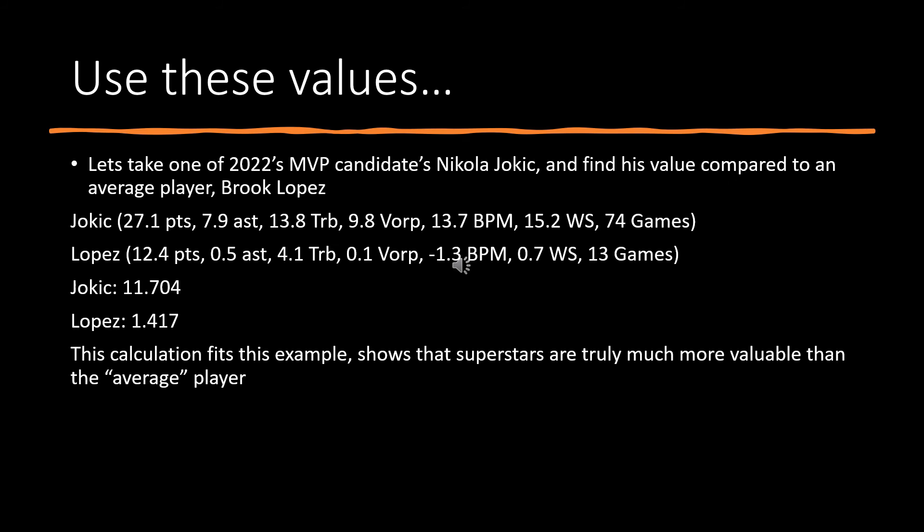Using these feature importance values, I'm going to take one of this year's MVP candidates, Nikola Jokic, and find his value compared to an average player from the season, Brook Lopez. Jokic averaged many points, assists, and rebounds, and had very high advanced metrics, while Lopez had fairly moderate to below-average ratings. Jokic has 10 points higher than Lopez in the value rating. This shows that superstars are truly much more valuable than the average player — not just a little bit more, but significantly more.